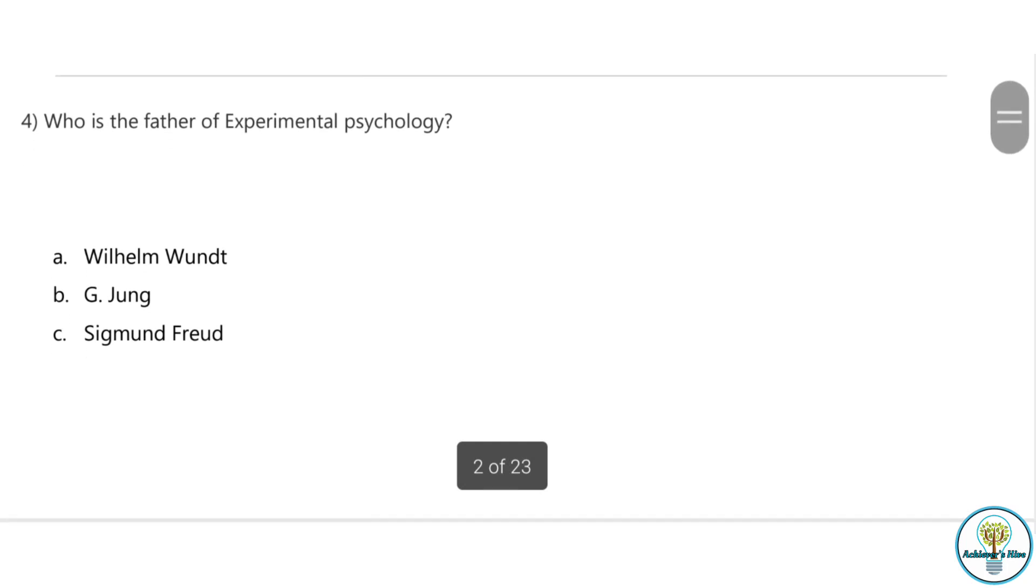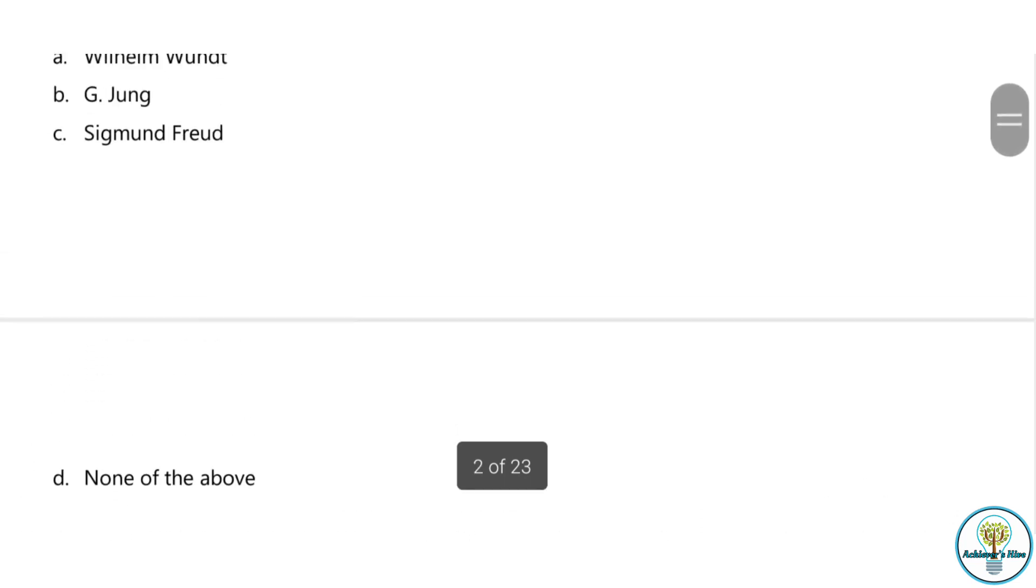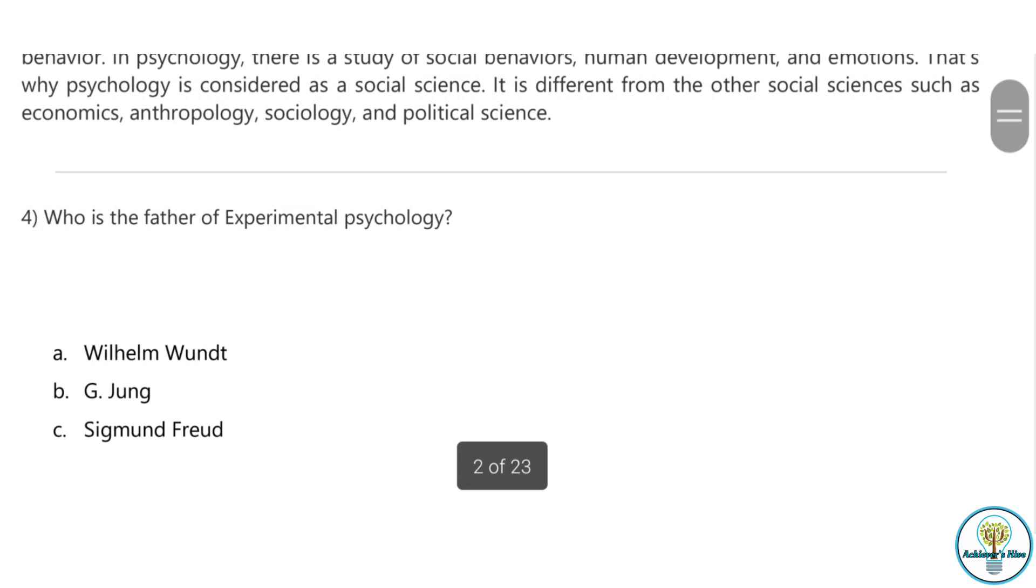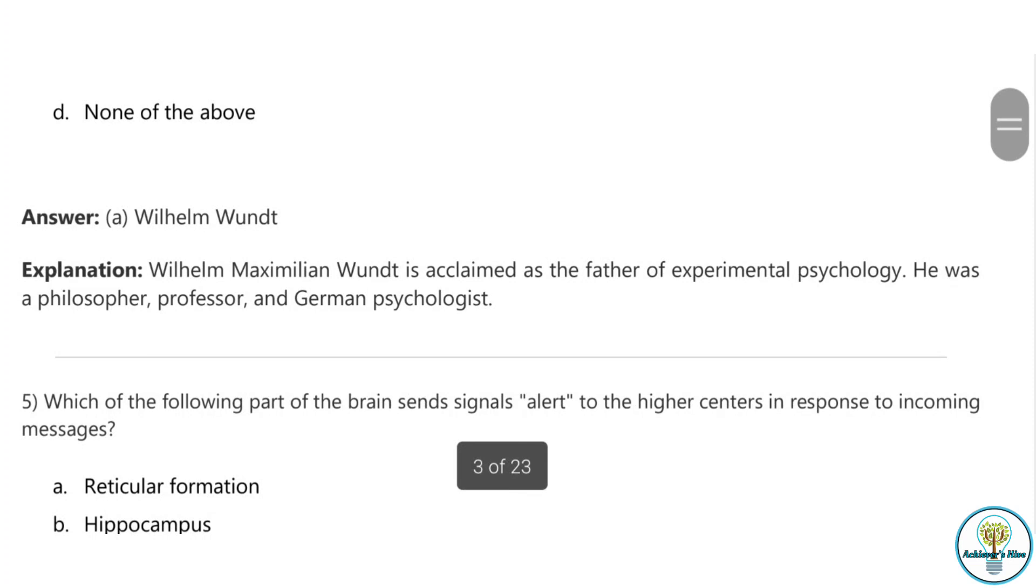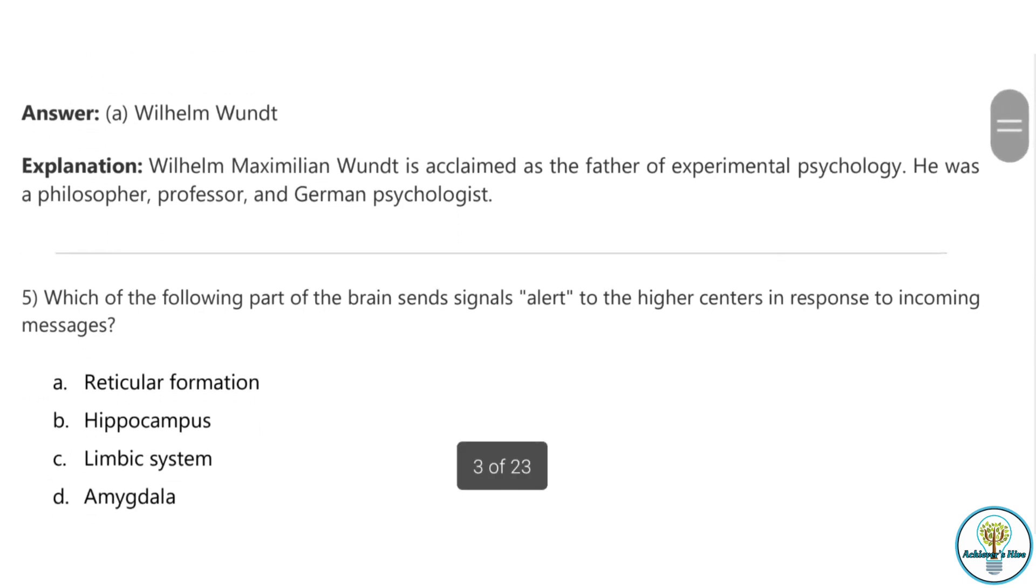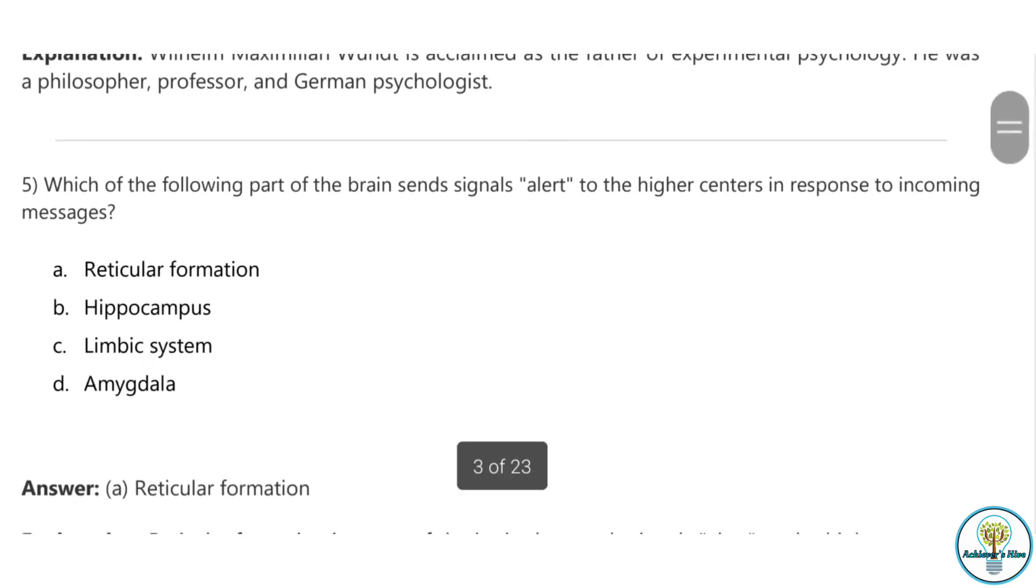Question number four: Who is the father of experimental psychology? The correct answer is William Wundt. He is acclaimed as the father of experimental psychology. He was a philosopher, professor and German psychologist. Question five: Which of the following part of the brain sends alerting signals to the higher centers in responding to incoming messages? That is reticular activating system, RAS, or also known as reticular formation.